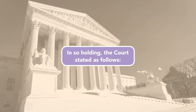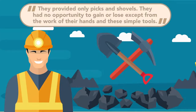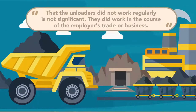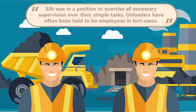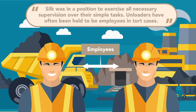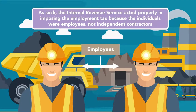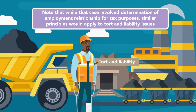In so holding, the court stated: they provided only picks and shovels; they had no opportunity to gain or lose except from the work of their hands and these simple tools. That the unloaders did not work regularly is not significant. They did work in the course of the employer's trade or business. Silk was in a position to exercise all necessary supervision over their simple tasks. Unloaders often have been held to be employees in tort cases. As such, the IRS acted properly in imposing the employment tax. Note that while the case involved employment relationship for tax purposes, similar principles would apply to tort and liability issues.